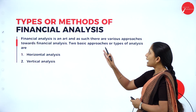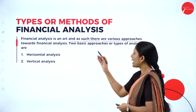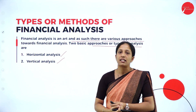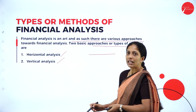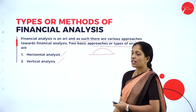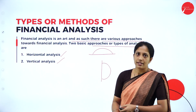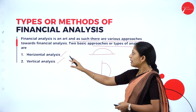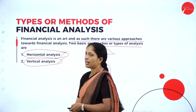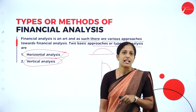Coming to types or methods of financial analysis — financial analysis is an art and there are various approaches. Two basic types of analysis are horizontal analysis and vertical analysis. Under horizontal analysis, we compare each and every item — which we call a comparative statement — and comparisons are made in a horizontal way. In vertical analysis, each and every item is compared vertically. In your next session, we will discuss individually what horizontal and vertical analysis are. For now, remember that financial statement analysis is mainly classified into these two types.